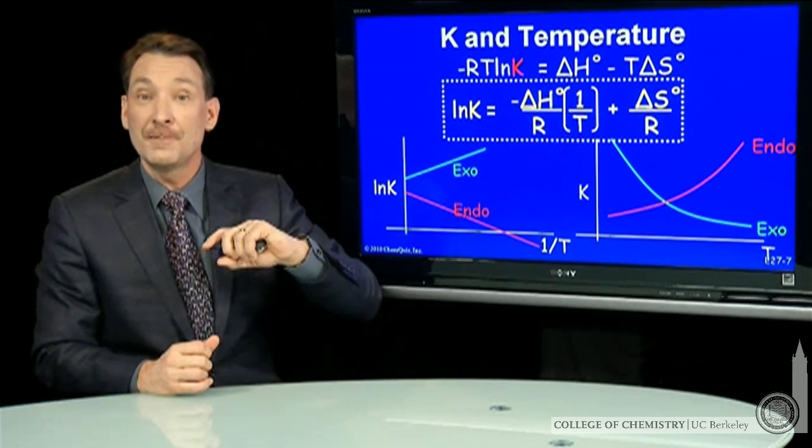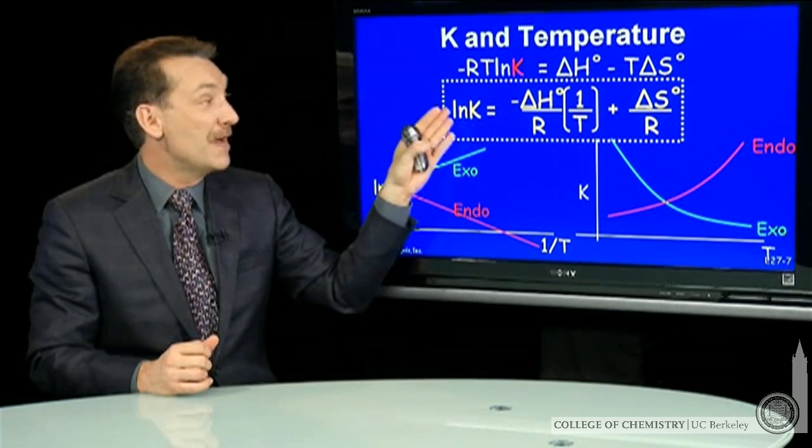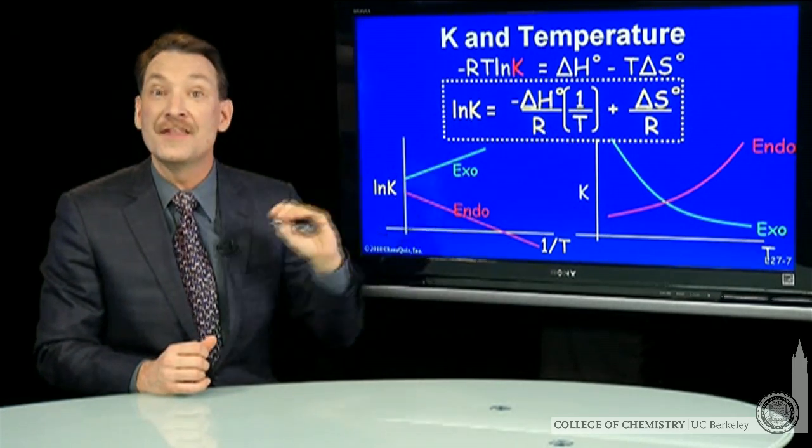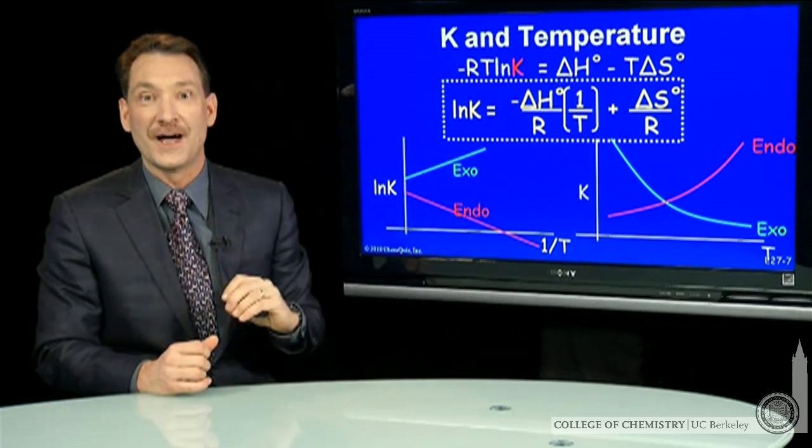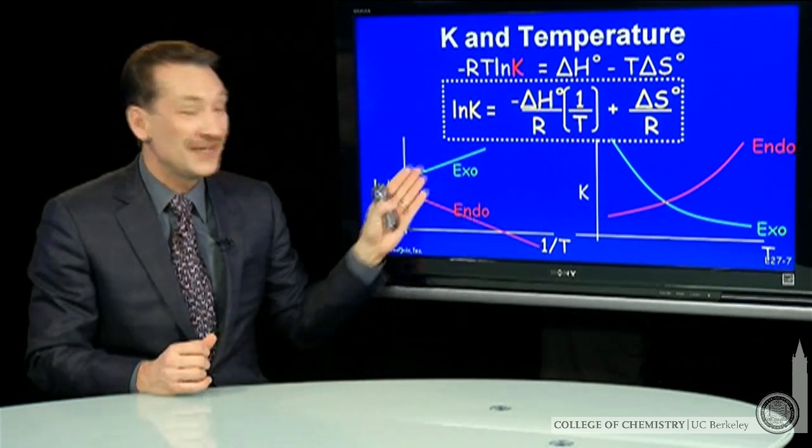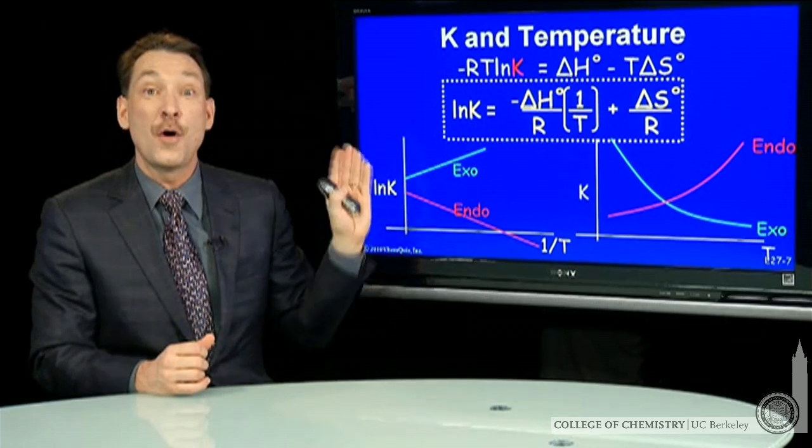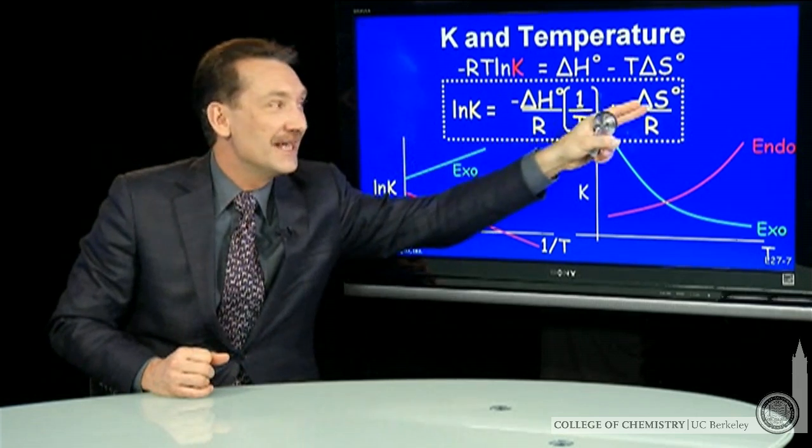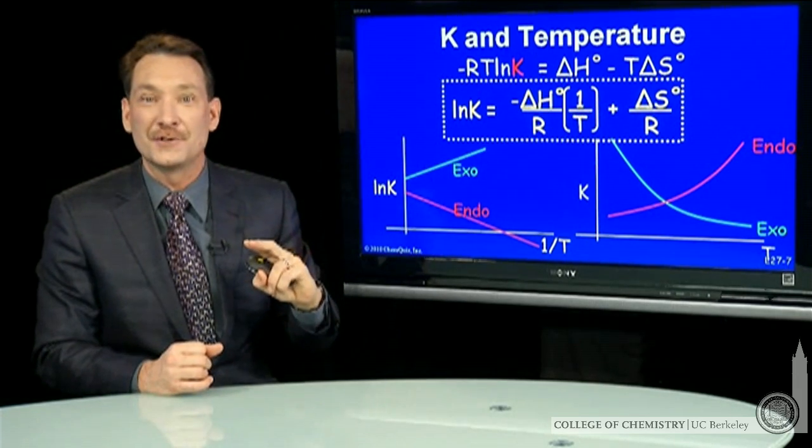I can also measure temperatures. So if I measure equilibrium constant as a function of temperature and then plot those values, I can plot out these lines. The slope gives me the enthalpy, and the intercept gives me the entropy.